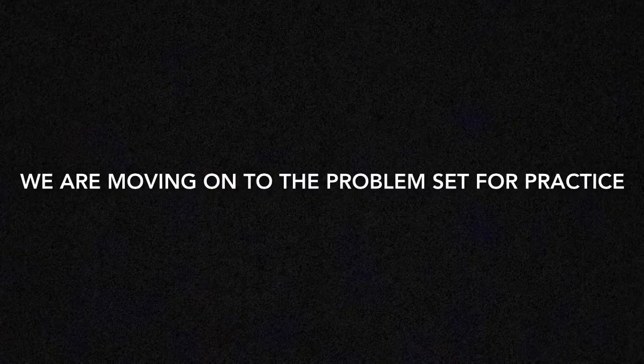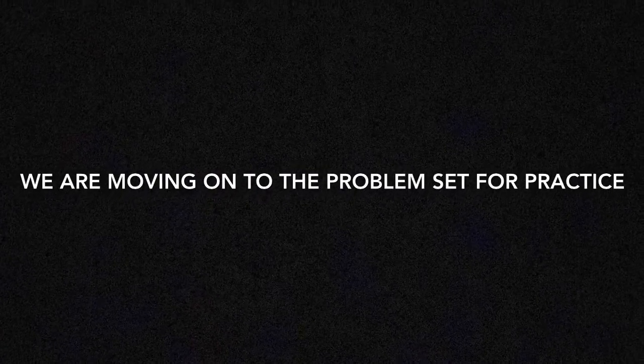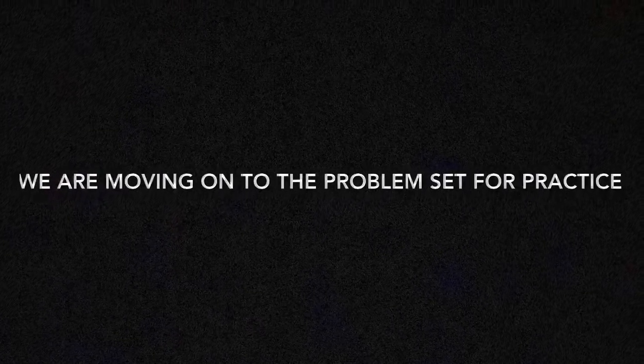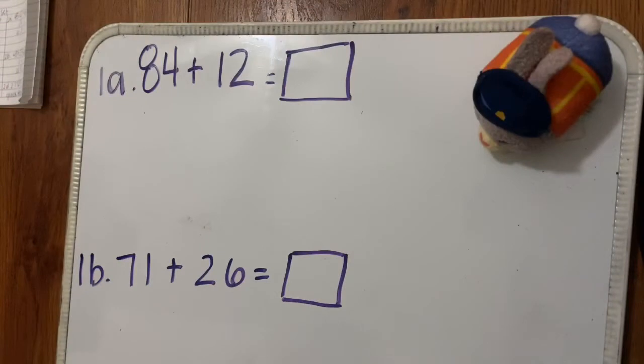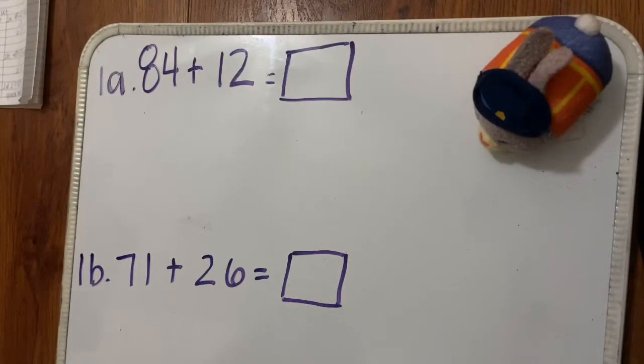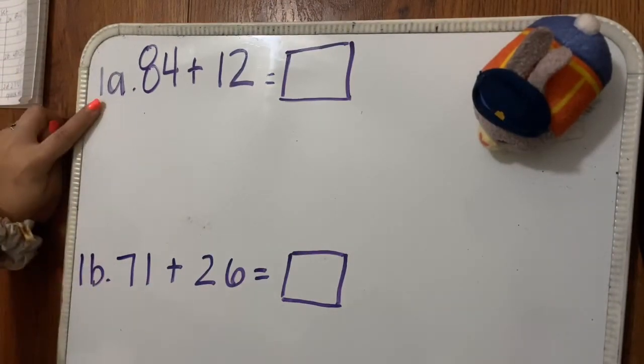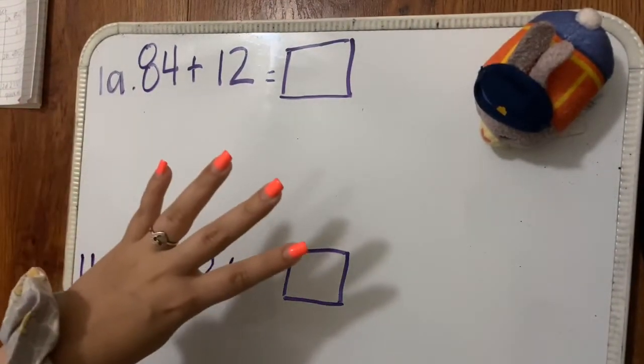We're going to be moving on to the problem sets for our practice today, and I'm going to be showing you two different ways to solve these problems: the number bond method and quick tens. I'm going to start with the first problem — I'm doing the first four on the front of the page and then the first four on the back.